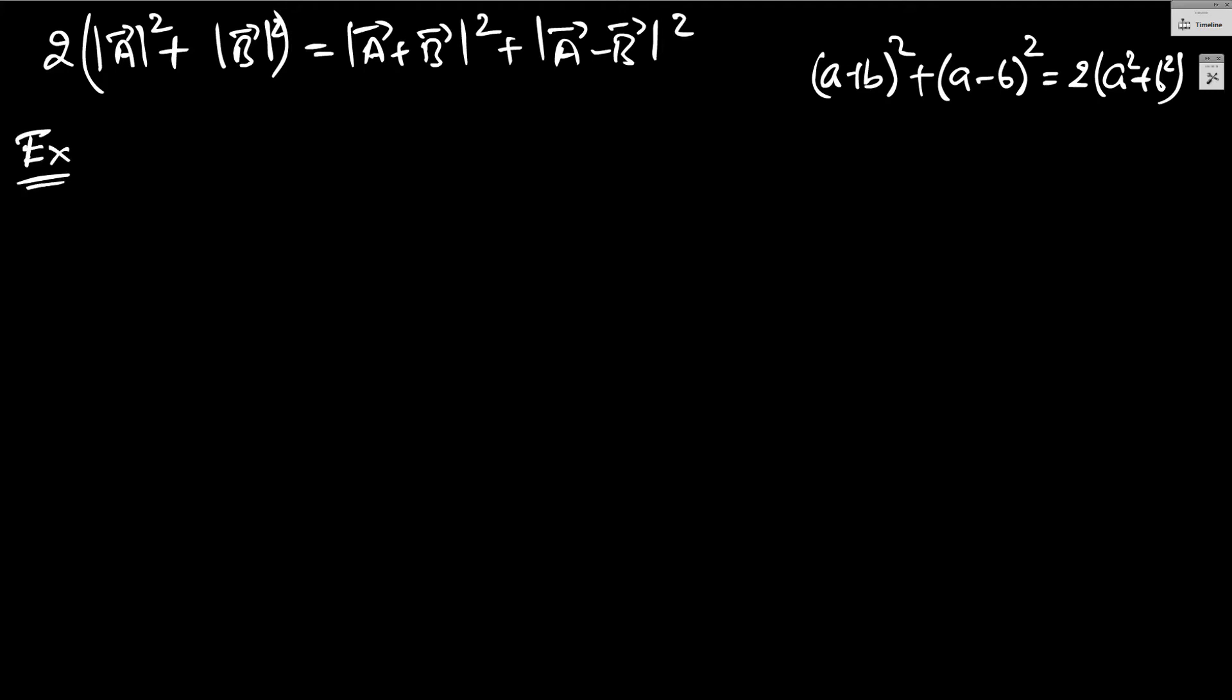Let's take an example. You have vector a, let's say the magnitude is 10. Vector b has a magnitude, say 5. And vector a plus b has a magnitude, say 5.